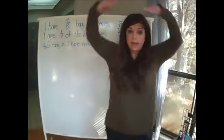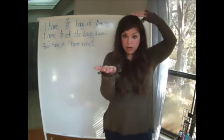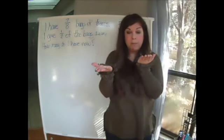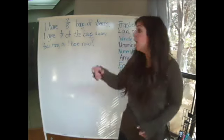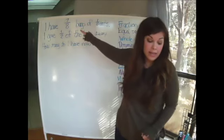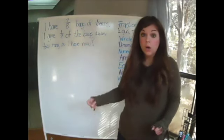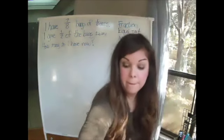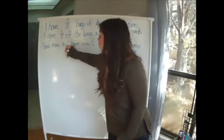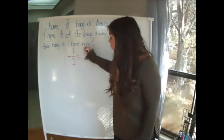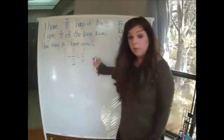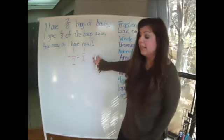So I know that I have my whole minus my part and I'm trying to figure out my other part. If we're estimating, we already said that seven out of eight is close to one whole. So one whole minus one half gives me one half. So my estimated answer is half.